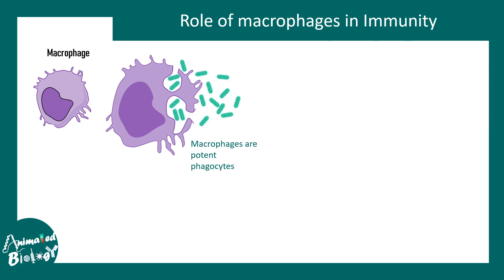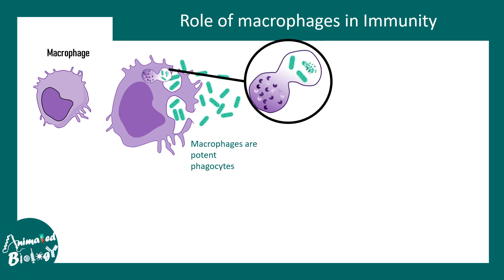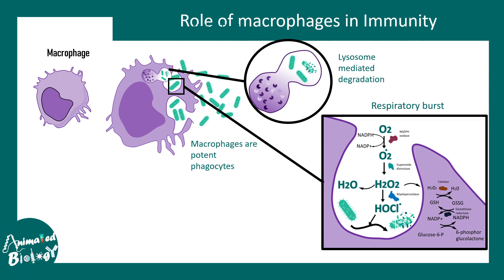Macrophages are potent phagocytes — that means they engulf pathogens such as bacteria or fungi. Once engulfed, they fuse their lysosomes with these engulfed bacteria and create phagolysosomes, which eventually leads to lysosomal enzyme-mediated degradation of these pathogens. They also have another strategy known as respiratory burst, a process by which they generate ROS, or reactive oxygen species, to kill these engulfed pathogens.